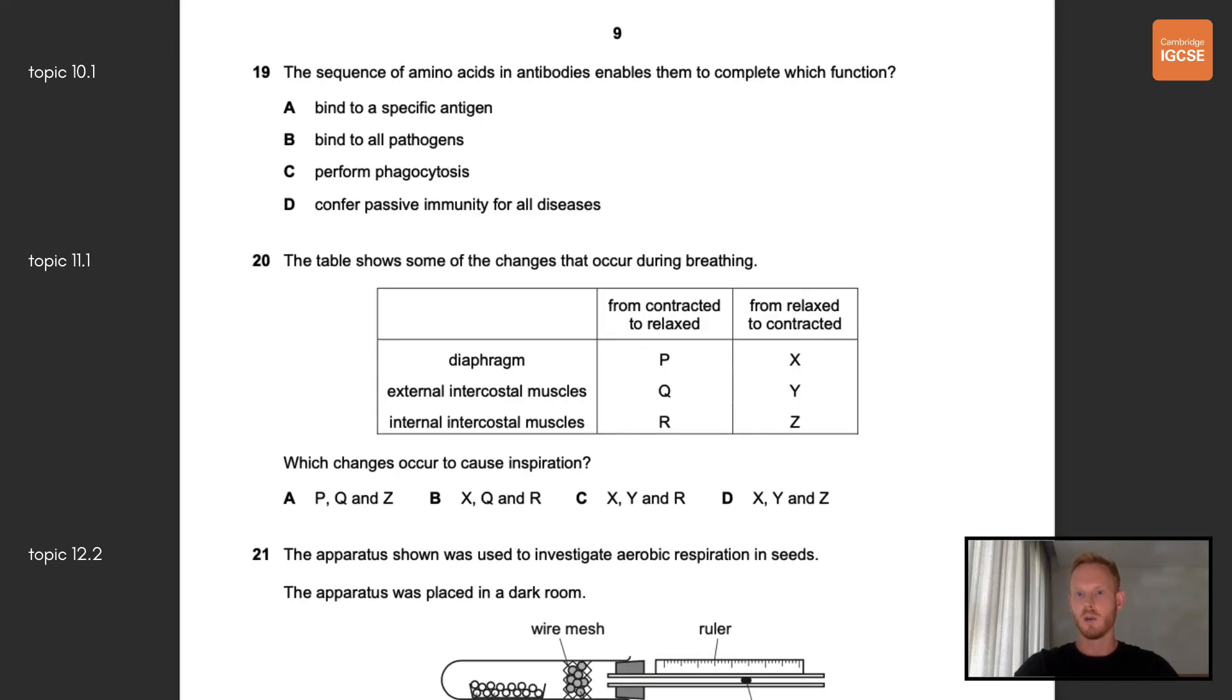Number 19, the sequence of amino acids in antibodies enables them to complete which function? The sequence of amino acids in a protein determines its specific shape and function. Antibodies are proteins and their function is to bind to specific antigens on the surface of pathogens. The correct answer is therefore A. Number 20, the table shows some of the changes that occur during breathing. Which changes occur to cause inspiration? During inspiration, which means breathing in, the diaphragm contracts and flattens. At the same time the external intercostal muscles contract and the internal intercostal muscles relax, causing the ribcage to move upwards and outwards. The correct letters are X, Y and R so the answer is C.